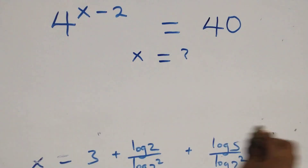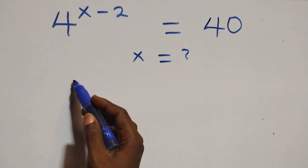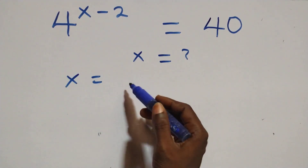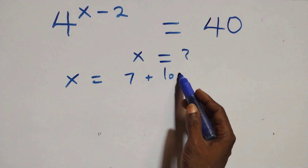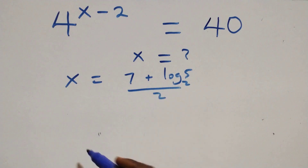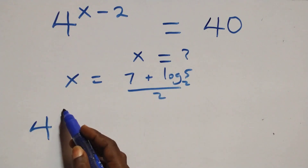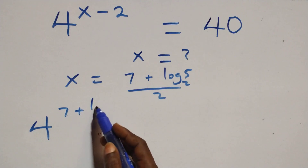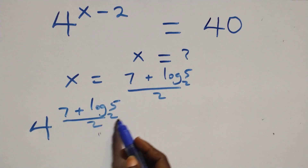The value of x here is x equals to (7 plus log₂5) all over 2, and what we have becomes 4 raised to power (7 plus log₂5) all over 2, then minus 2, equals to 40.